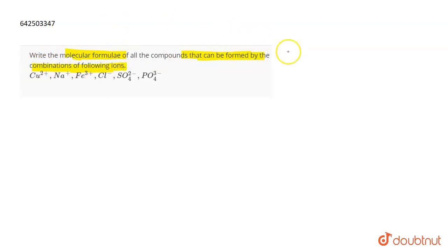One thing that you have to keep in mind is that a molecular formula is formed when you have a cation and an anion which are combined together. So a cation and anion when combined together, they form a molecular formula.